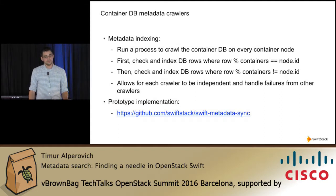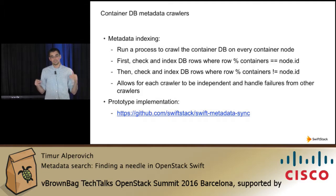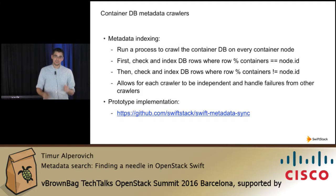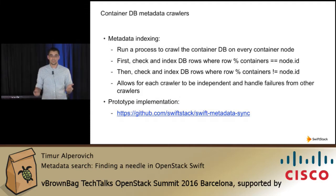Our idea is to run a daemon that looks at these container databases, iterating row by row through each entry. To split work across multiple nodes, we split by node ID — with three nodes, each looks at a third of all rows, indexing documents or propagating changes like deletes. We then verify that rows we haven't indexed have been handled by the other daemons. If not, we fix it up. The nice benefit is there's no communication between daemons, so we can tolerate failures quite easily.